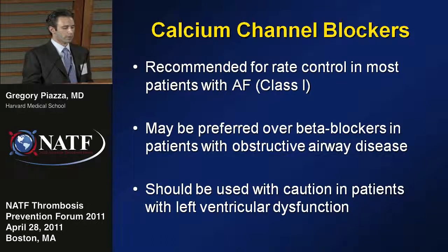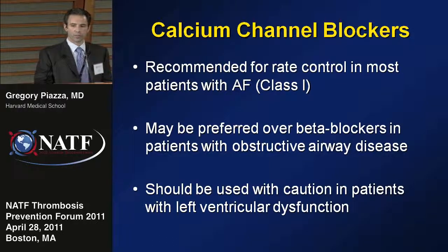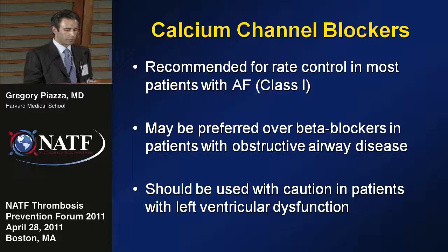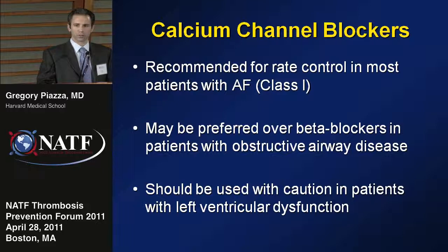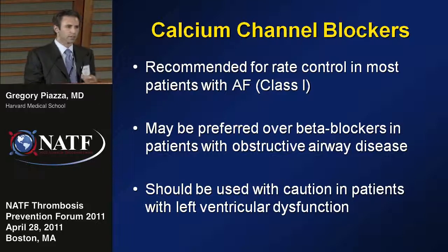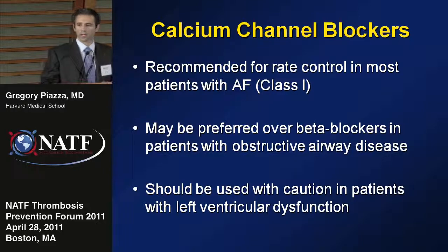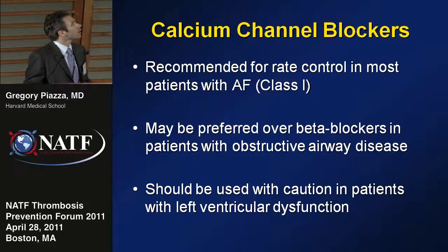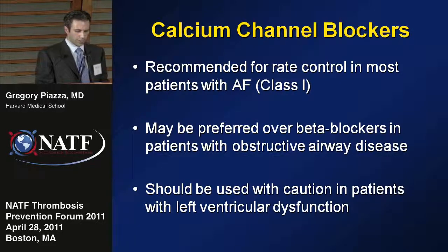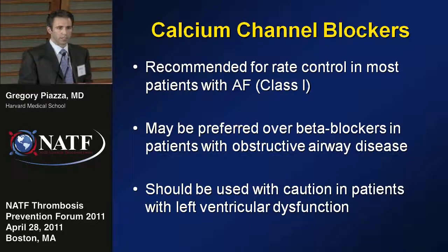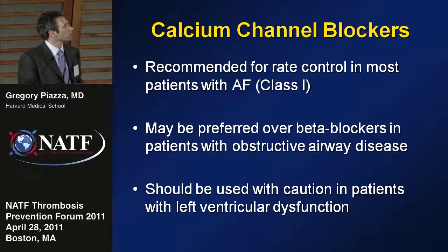Calcium channel blockers are another group of agents recommended for rate control in atrial fibrillation. They may be preferred over beta blockers in certain patients, especially those with chronic obstructive pulmonary disease or asthma, because beta blockers can sometimes cause bronchospasm. Calcium channel blockers should be used with caution in patients with left ventricular dysfunction, as some can decrease myocardial contractility.